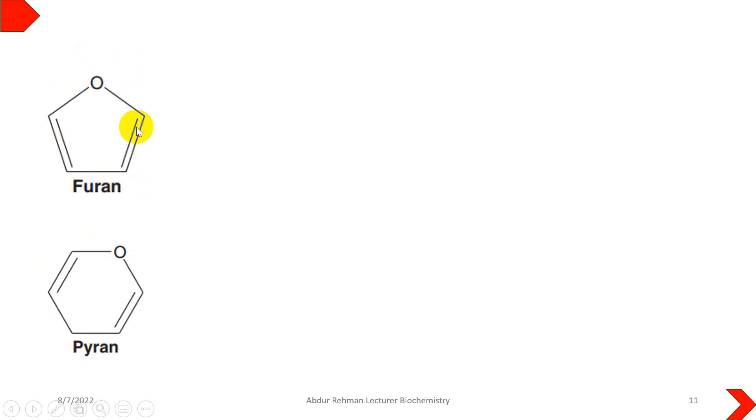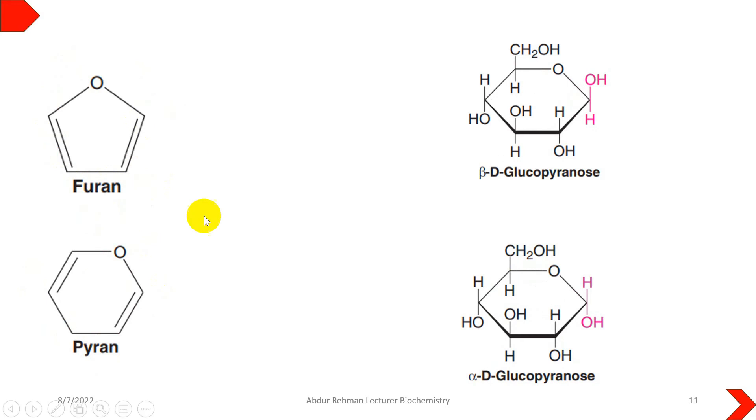Finally, to sum up the tutorial, following things you have to notice if you look at the cyclic structure of monosaccharides. Number one: if it is a four-carbon ring structure then it will be furanose, or if it is a five-carbon ring structure then it will be pyranose or pyran.